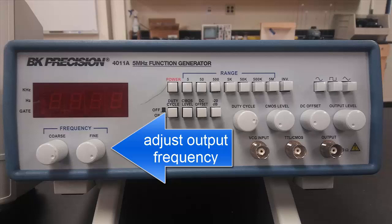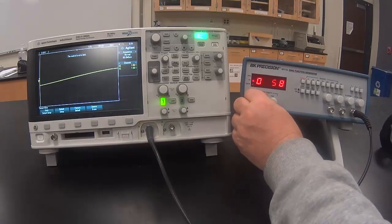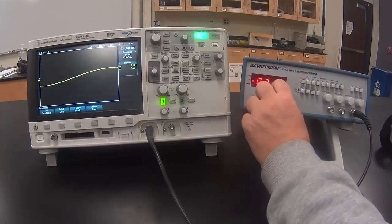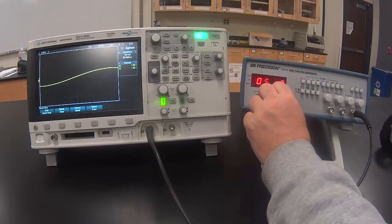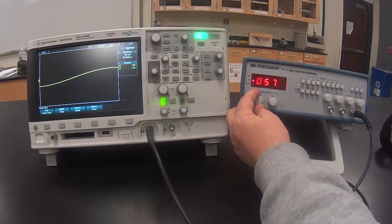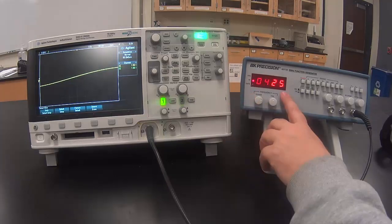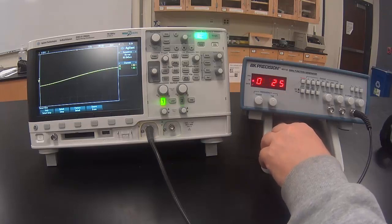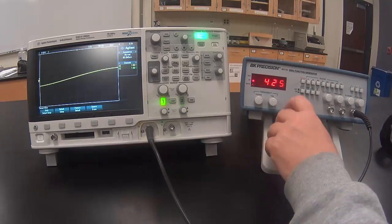Then we're going to use these knobs to adjust the exact output frequency that we want. There's a coarse knob and a fine knob. In the video the number on the display is hard to read. That's just a function of the digital nature of the camera and the function generator. But in real life it should look stable.